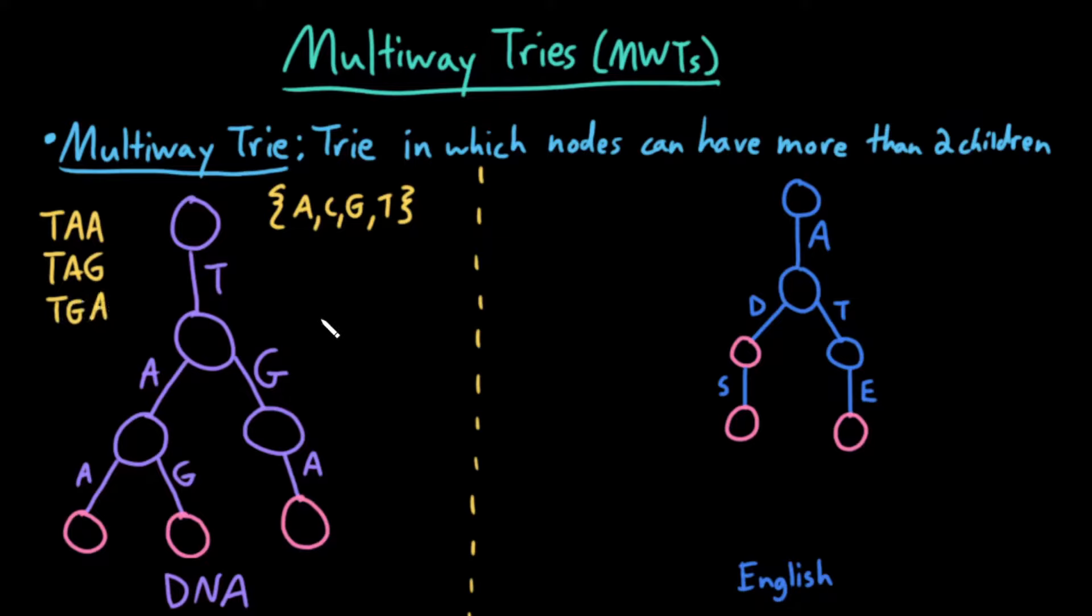This multi-way trie only has three words because it only has three word nodes, which I've colored in pink. And those are these three words. If you've taken a biology class, you might recognize these as the stop codons.